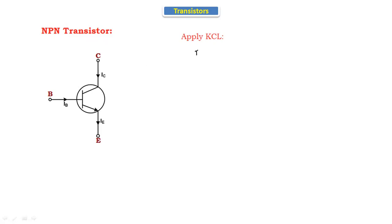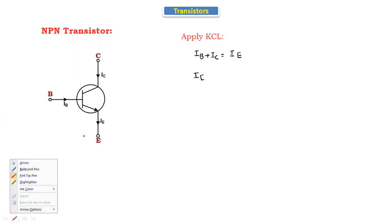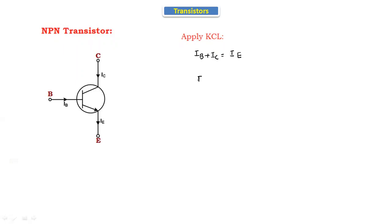So the emitter current IE is equal to the base current IB plus the collector current IC. The emitter current is the combination of base current plus collector current. This is the NPN transistor equation: IE = IB + IC.